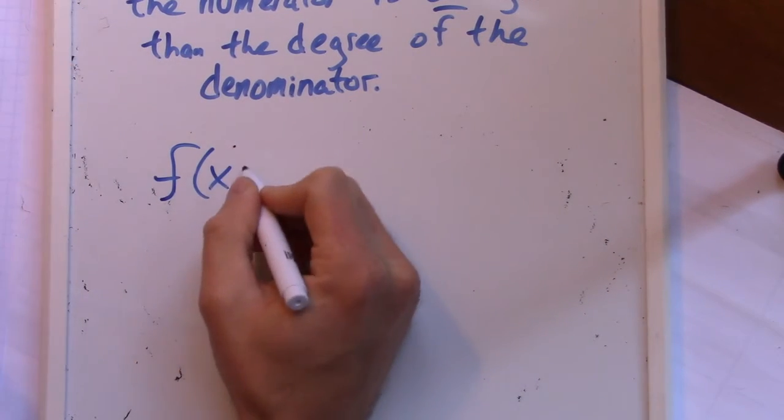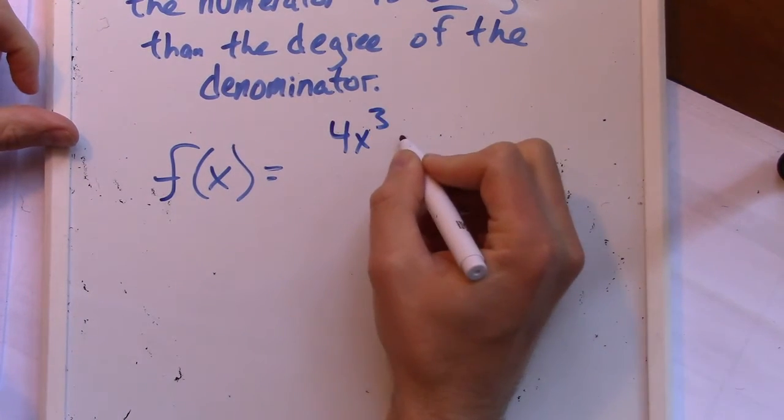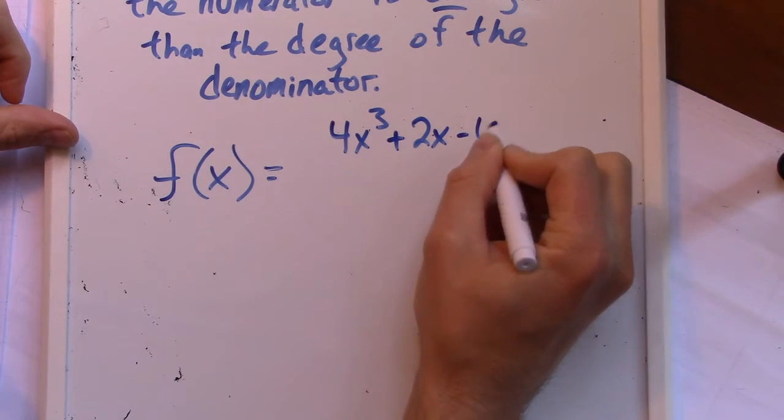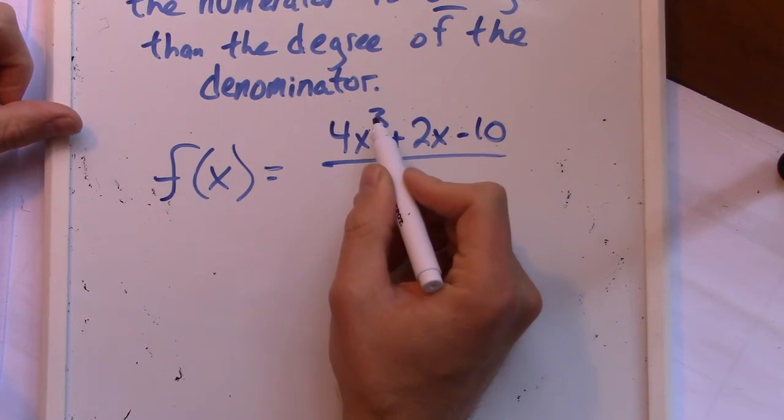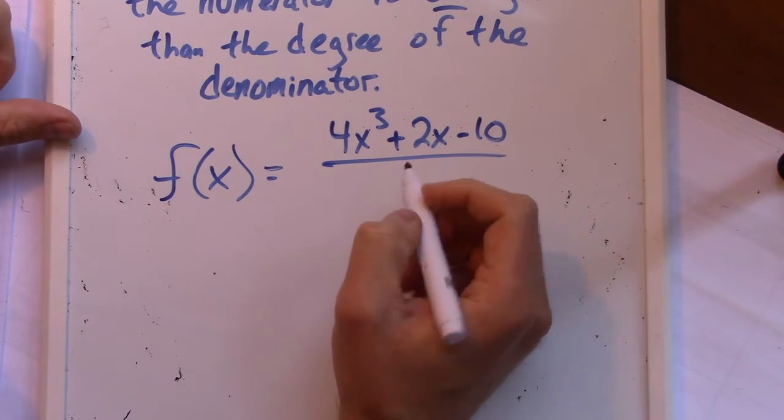So f of x, let's say f of x equals 4x cubed plus 2x minus 10. And we're dividing by something that is one less. So the degree of the numerator has to be one greater than the denominator in order for there to be an oblique asymptote.